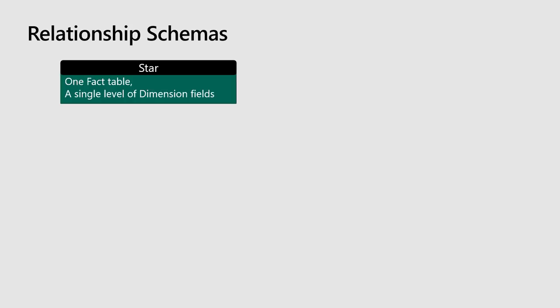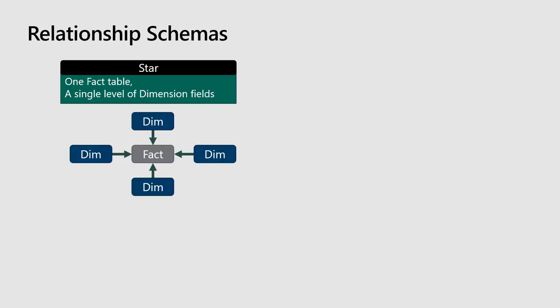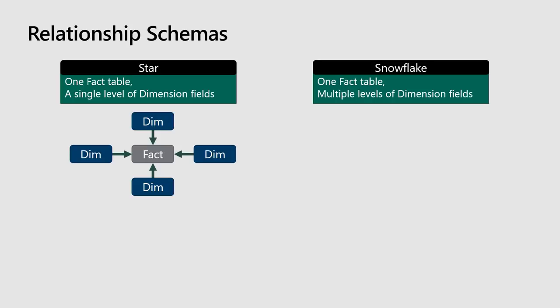Once we've got our tables built correctly, we need to talk about relationship schemas. For those of you who work with Power Pivot, you take two tables, drag fields from one to the other, and everything links up. The first schema we're looking for — the ideal one — is called a star schema. It means you've got one fact table and several dimensional tables linked to it. The key thing about a star schema is that there is only one level of dimensions around the fact. There can be four dimensions or 90 dimensions, but there's only ever one level.